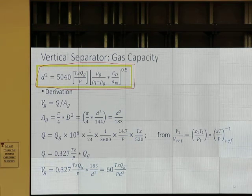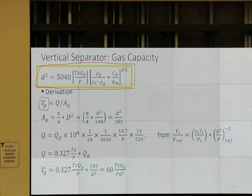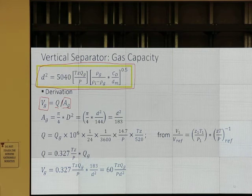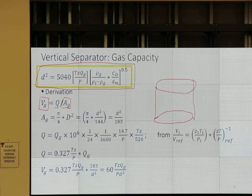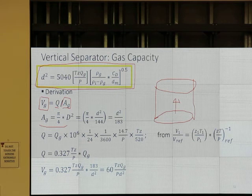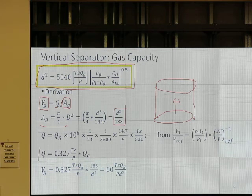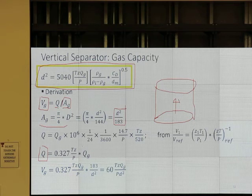The reason for this is gas velocity equals Q over area. But this time, for a vertical separator, the cross-section area of the flow will be πD²/4. That's the area. After doing unit conversion, I get that. The relationship between actual flow rate and standard flow rate gives the same equation.